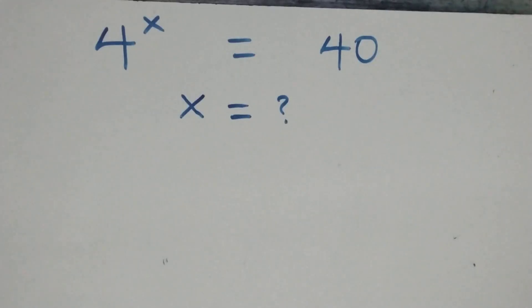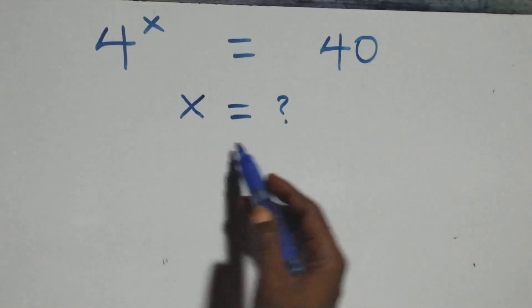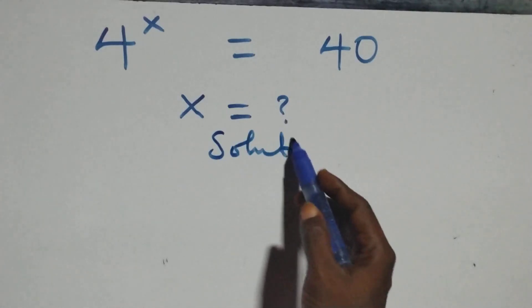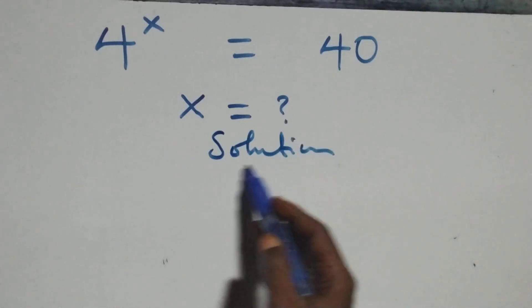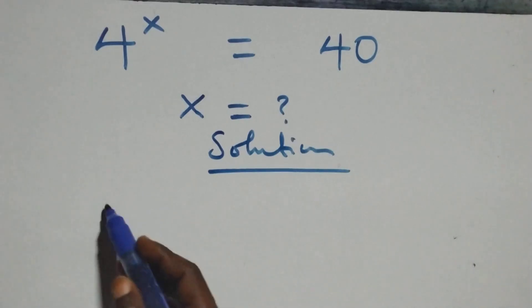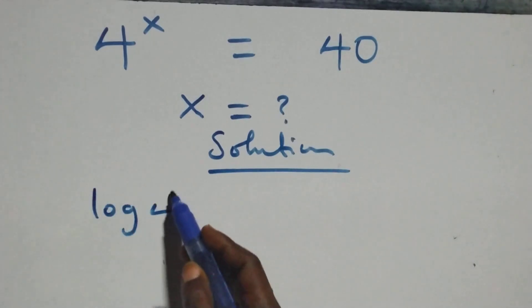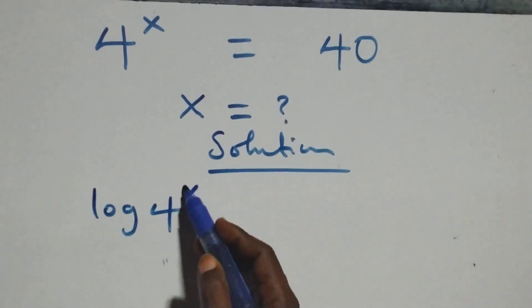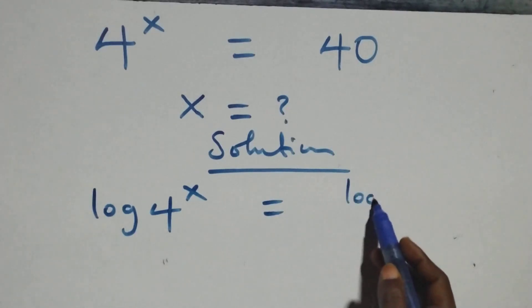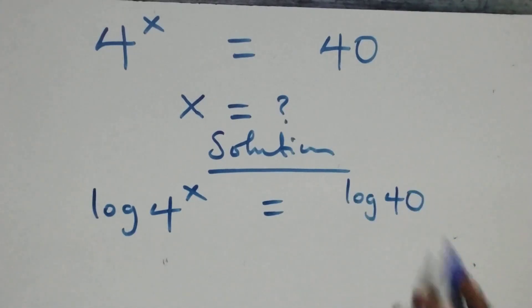Hello, you are welcome. How to solve this equation — a nice explanation from here. What we have here: we take the log on both sides, that is, we have log of 4 raised to power x equals to log 40 on this side.